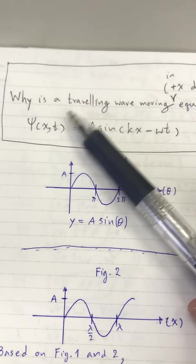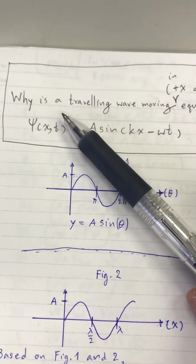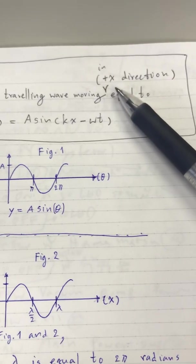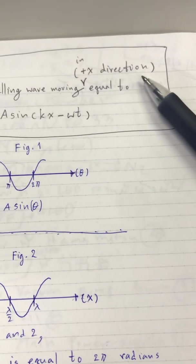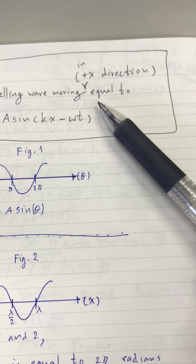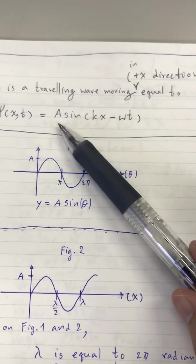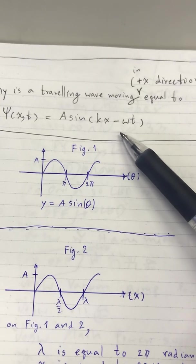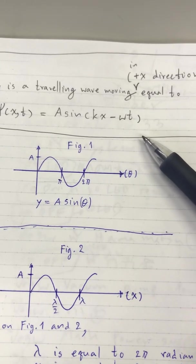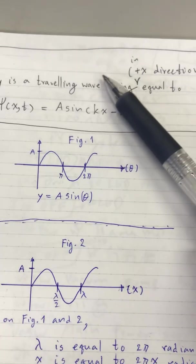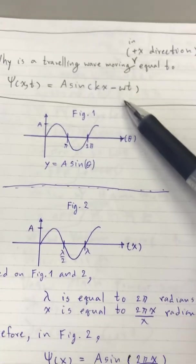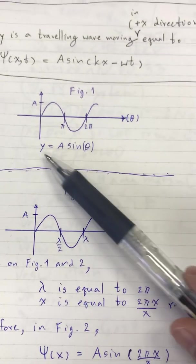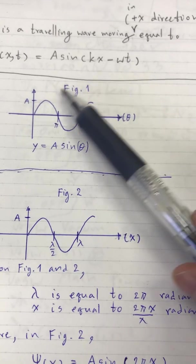In this video, a traveling wave moving in the positive x direction is given by y = A·sin(kx - ωt). I will explain this equation in this video. We start with Feature 1.